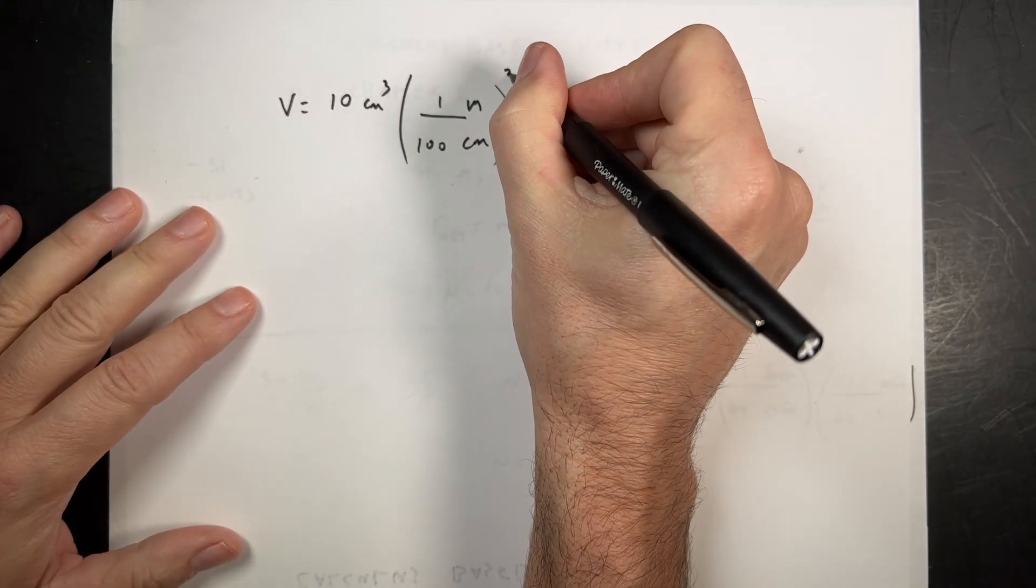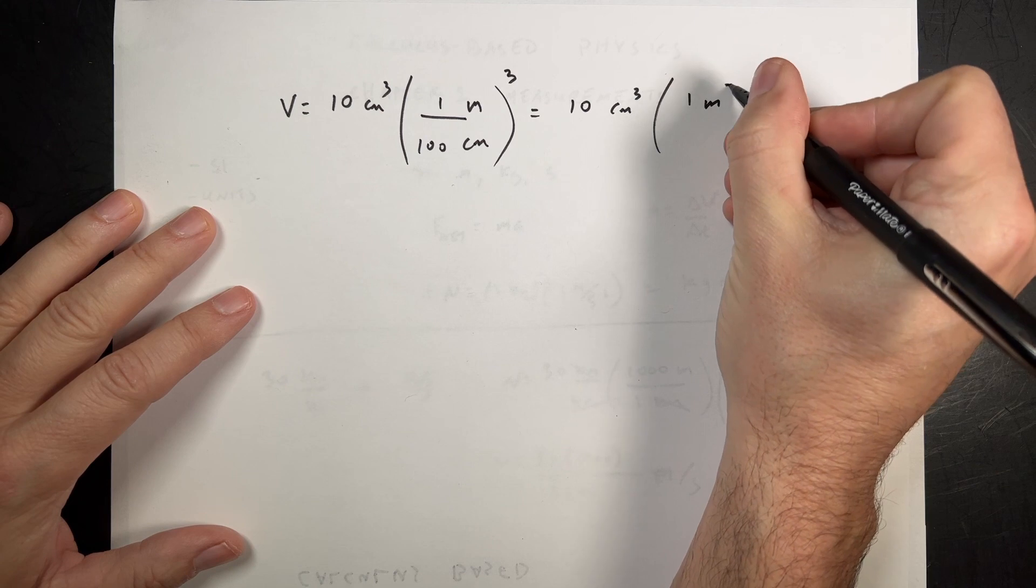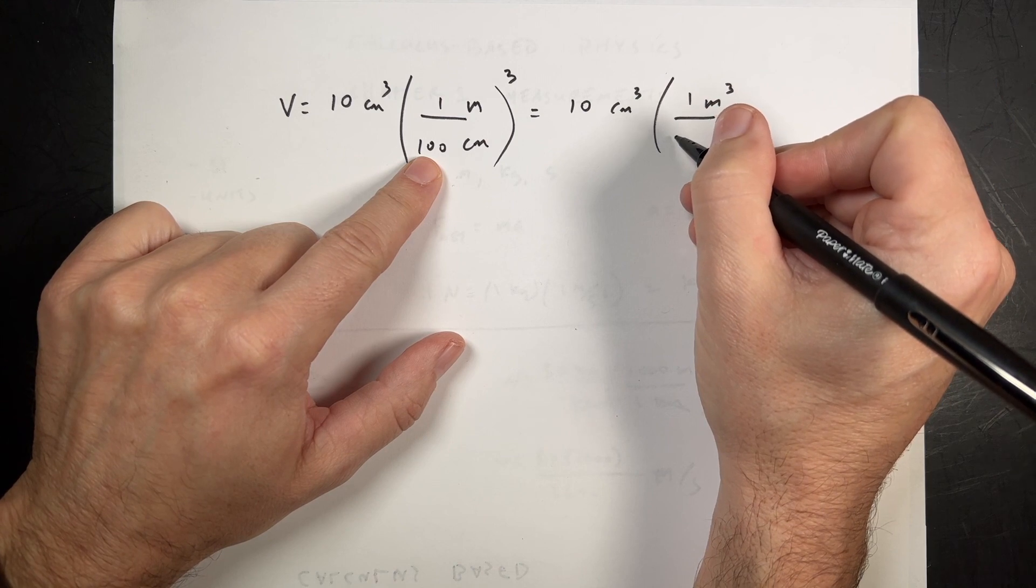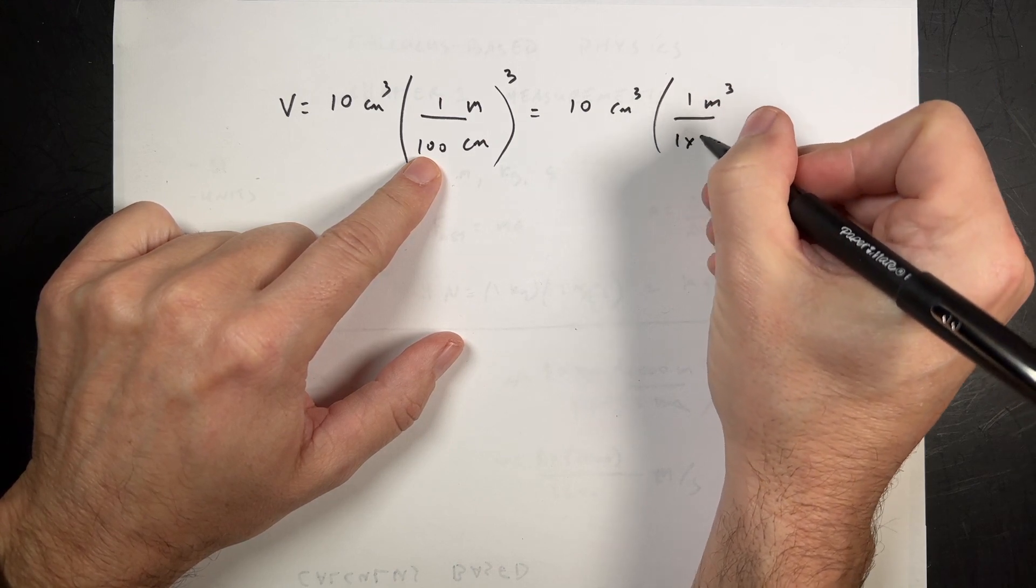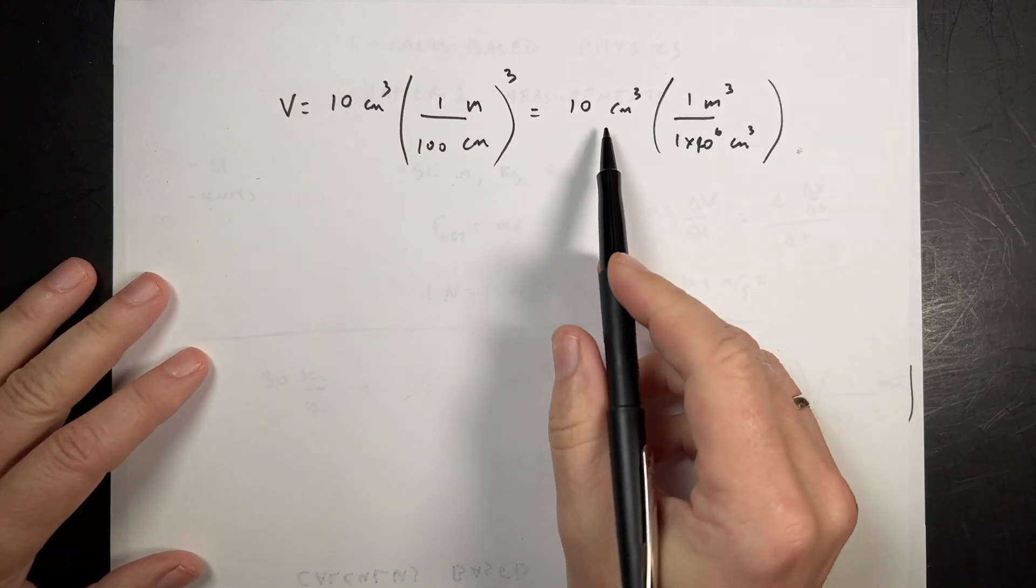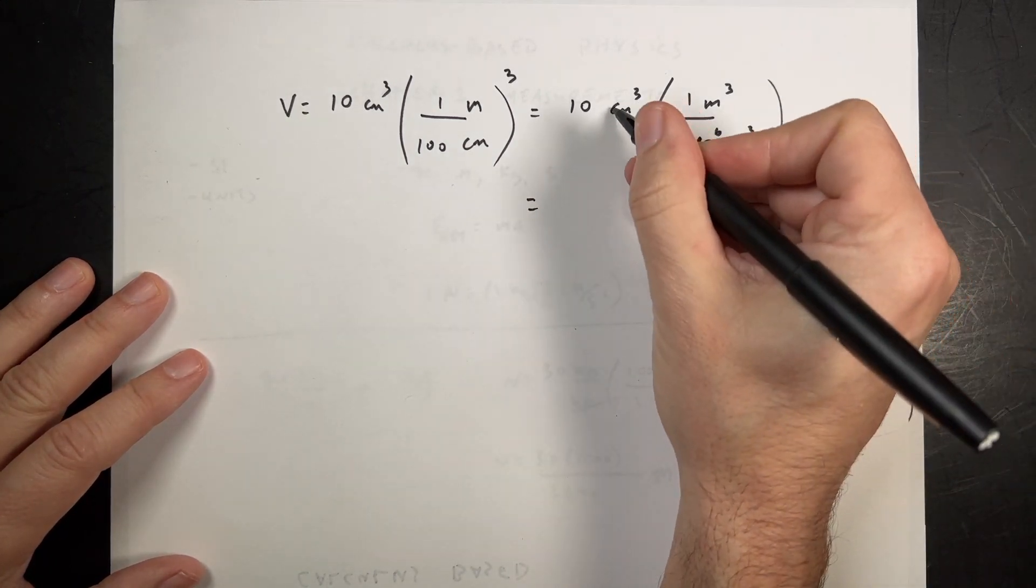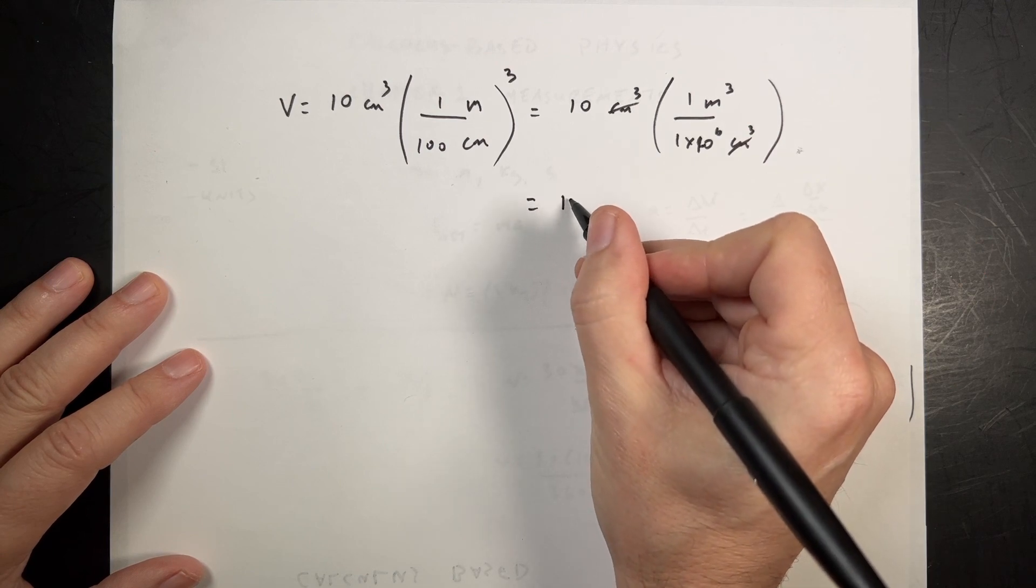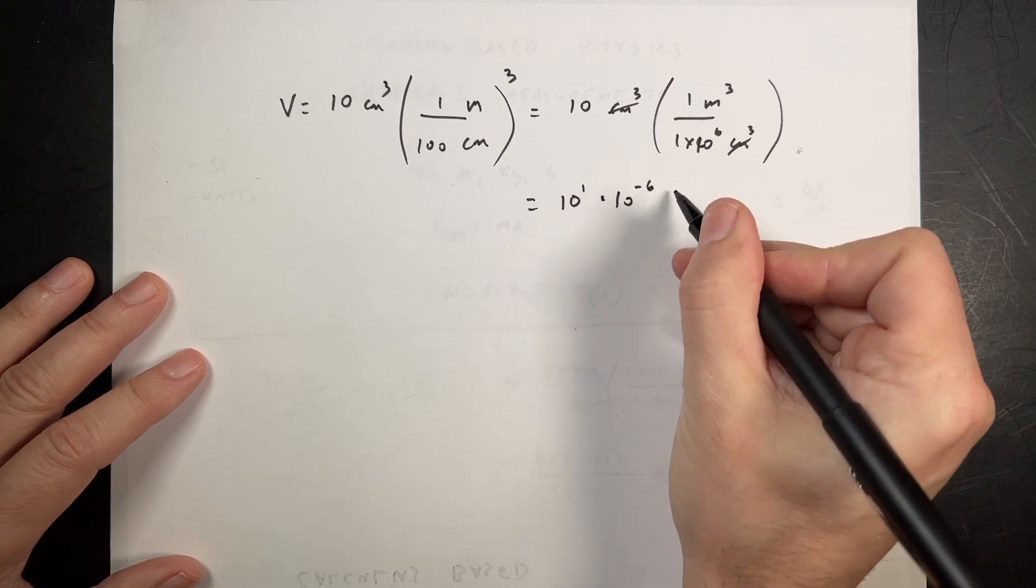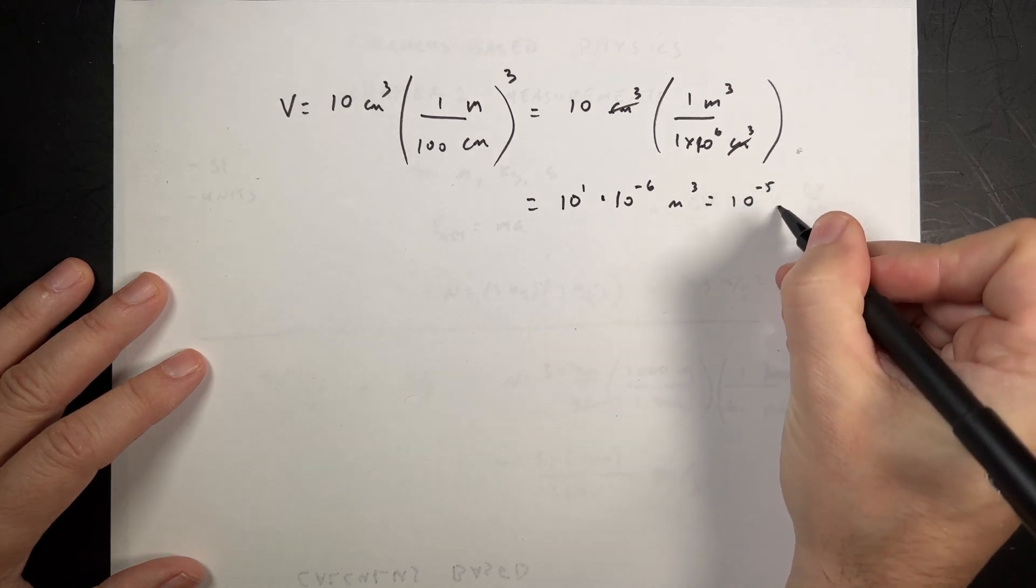One way I can fix that is to cube this. So this would be equal to 10 centimeters cubed times 1 meter cubed over, this is going to be, 100 times 100 is 10,000, so it's a million. So 1 times 10 to the 6th centimeters cubed. And then when I divide this, I get, this is equal to, the centimeter cubed's canceled, I get 10 to the 1 times 10 to the negative 6 meters cubed, because I just put that up on top. So this is going to give me 10 to the negative 5th cubic meters.